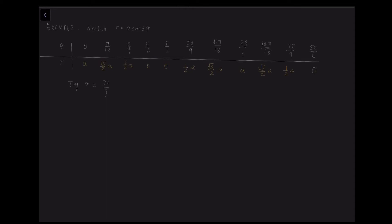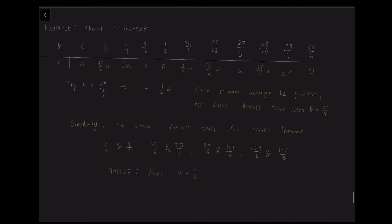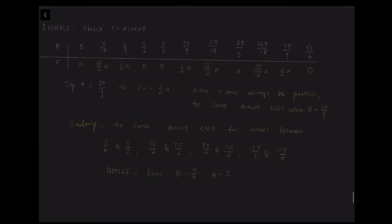Let's try some other theta values. For example, at 2π over 9, plugging into the calculator gives r equal to negative half a. Since r must always be positive, the curve does not exist when theta equals 2π over 9. Similarly, the curve does not exist for theta between π over 6 and π over 2, between 5π over 6 and 7π over 6, between 9π over 6 and 11π over 6, and between 13π over 6 and 15π over 6.